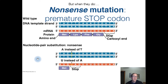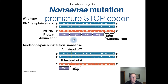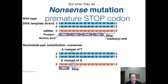The next type is a nonsense mutation. A nonsense mutation changes a codon from one that codes for a specific amino acid to one that codes for a stop codon. So a nonsense mutation introduces a stop codon earlier in the messenger RNA, and translation will stop early. What you end up getting from a nonsense mutation is a shortened protein, because the ribosome encounters this premature stop codon and it's done.